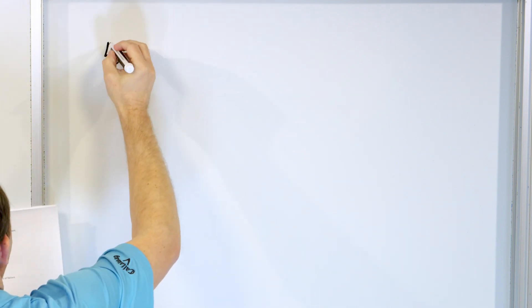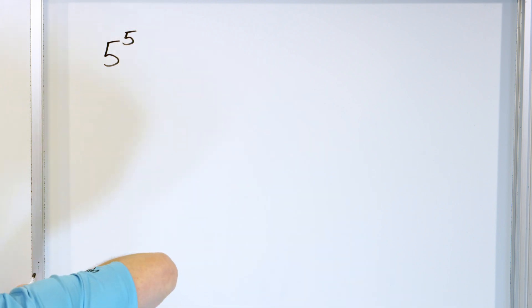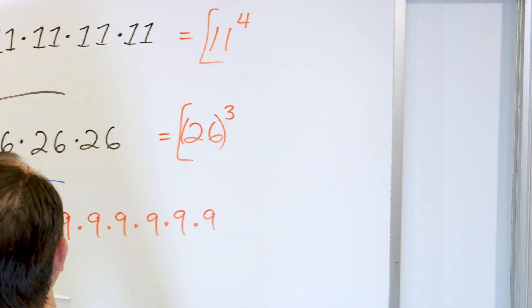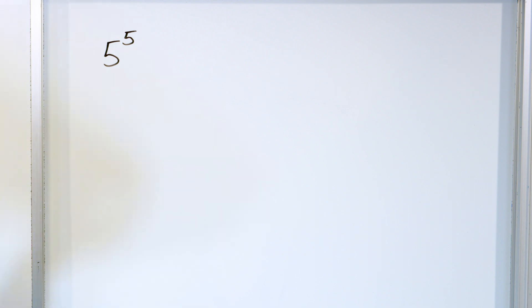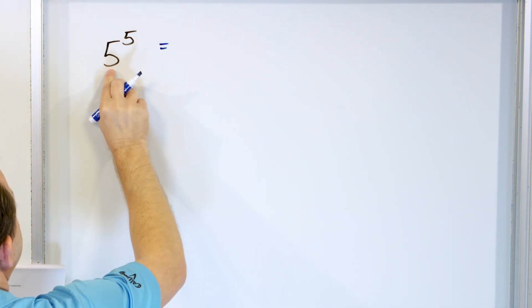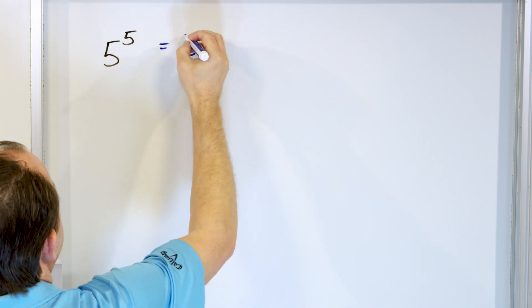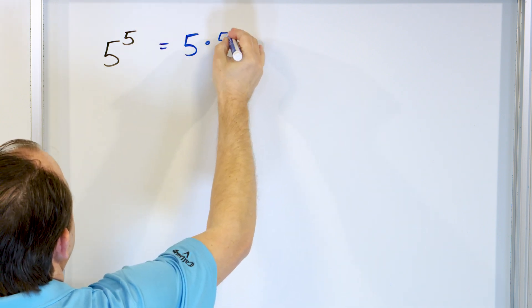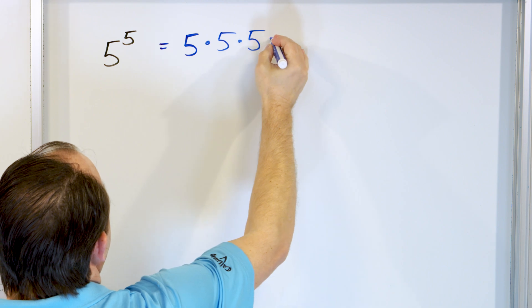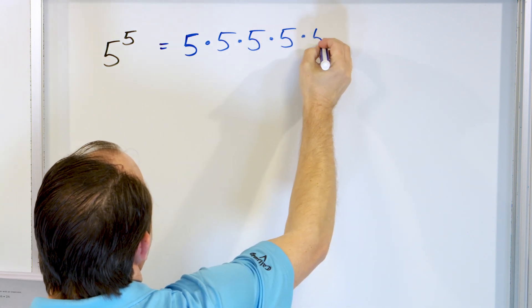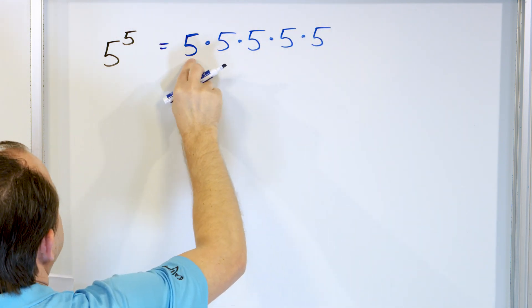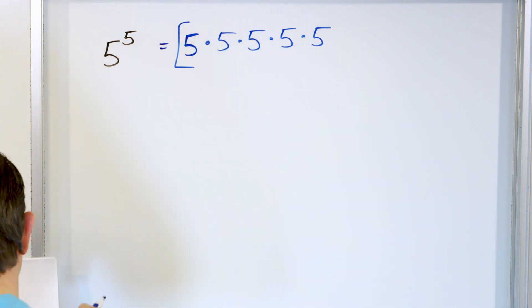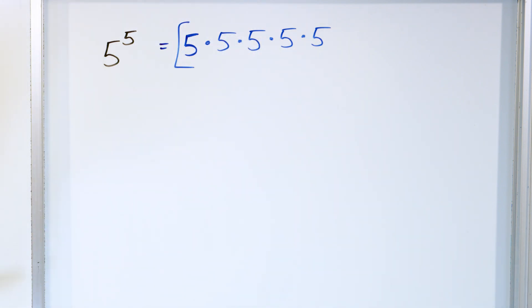Let's write five to the power of five as a product of factors. We have a base of five and we're doing it five times: number one, number two, number three, number four, and number five — five of them multiplied together. Five to the power of five, and that is the final answer.